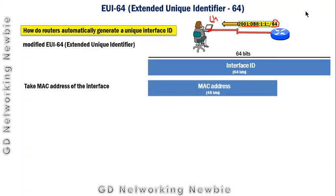To get those 64 bits, the client machine is going to take the MAC address of its interface — the MAC address of the network interface card. You should remember that a MAC address is actually 48 bits, but we need 64 bits, so it's not complete.